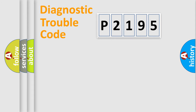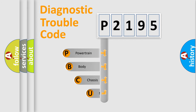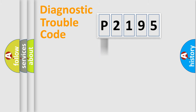Let's look at the history of diagnostic fault code composition according to the OBD2 protocol, which is unified for all automakers since 2000. We divide the electric system of an automobile into four basic units: powertrain, body, chassis, and network.